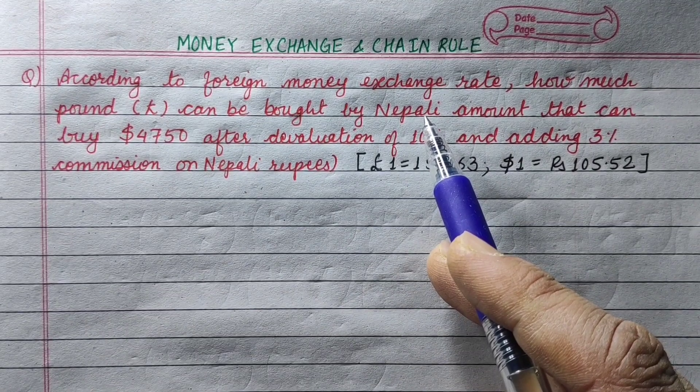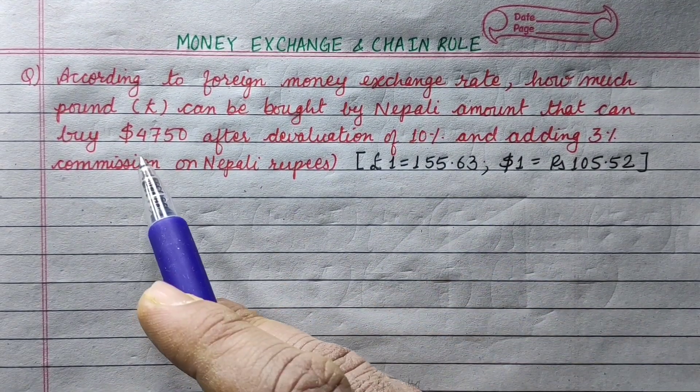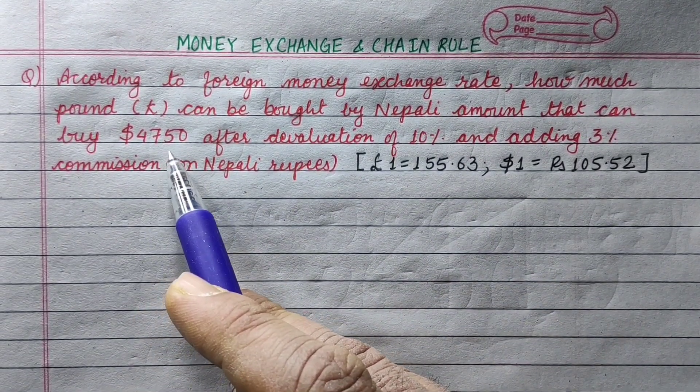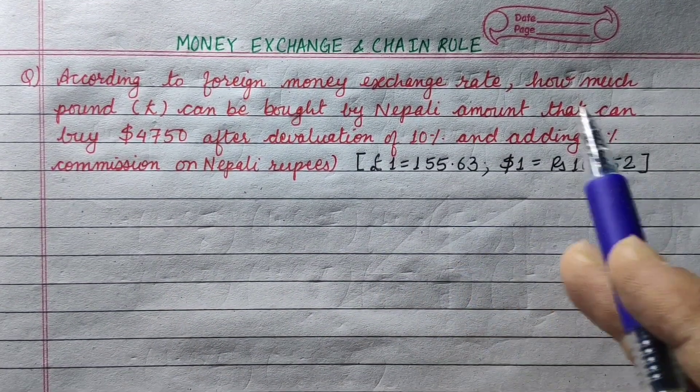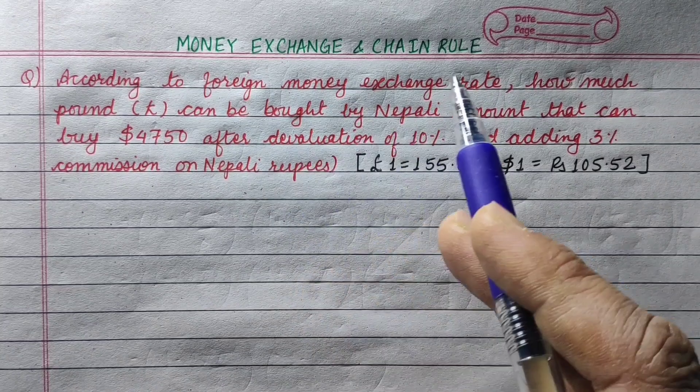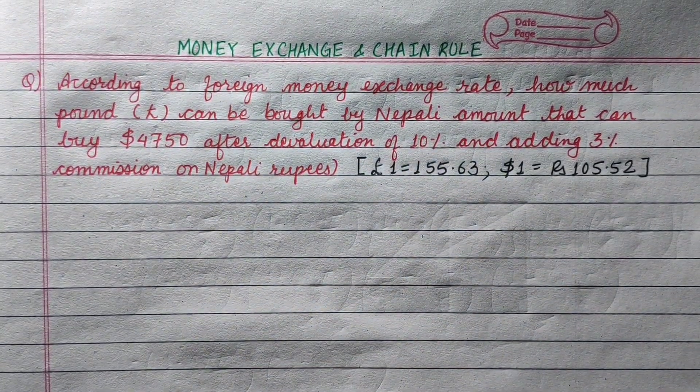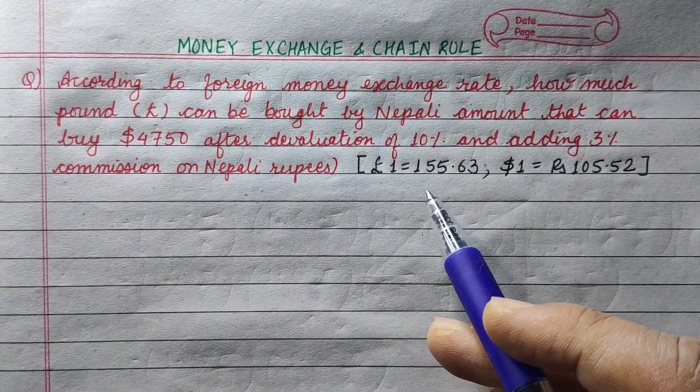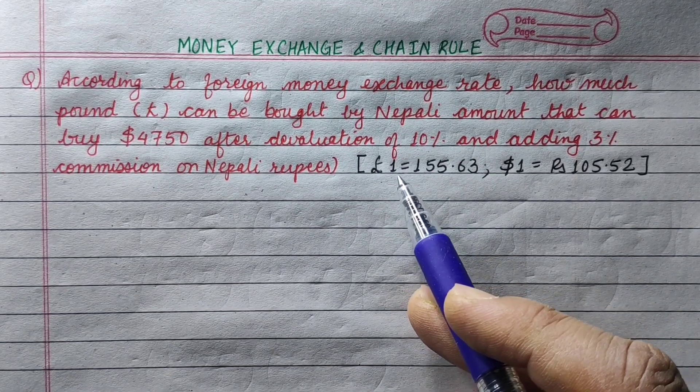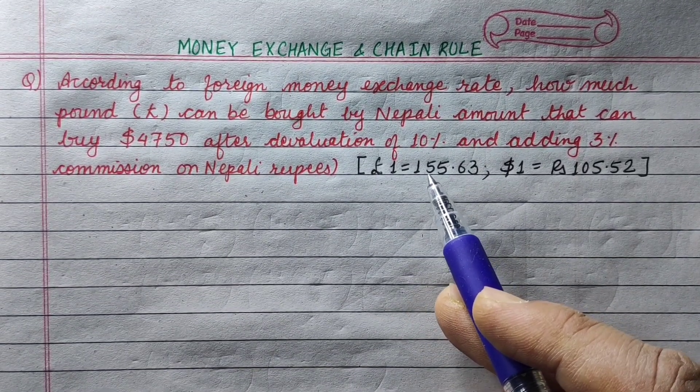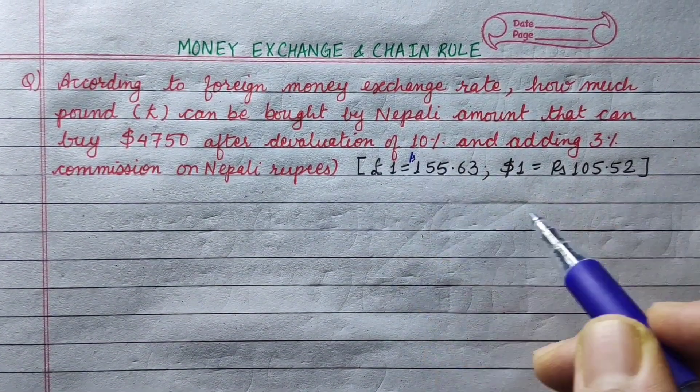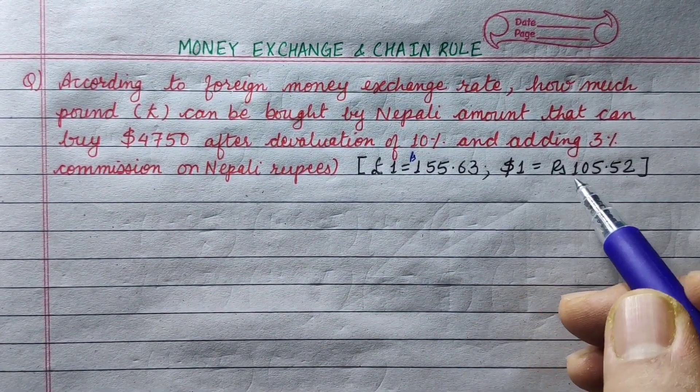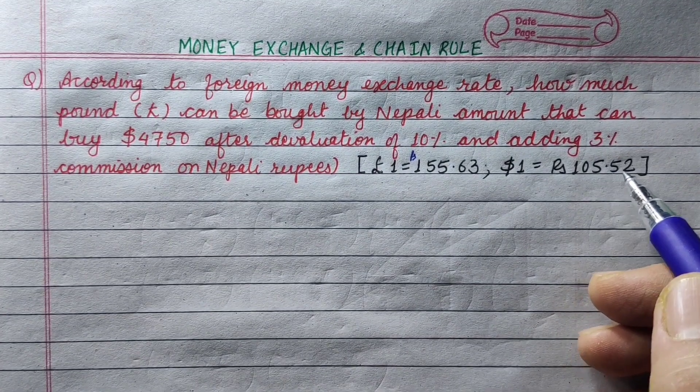Nepali amount is $4750 after 10% devaluation and 3% commission added. The exchange rate is 1 pound equals Rs. 155.63 and $1 equals Rs. 105.52.